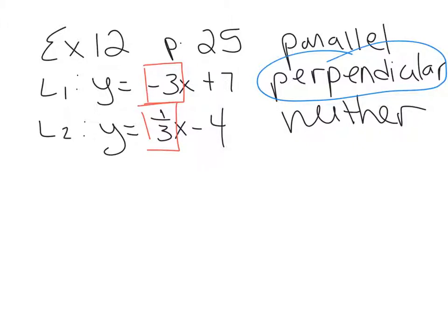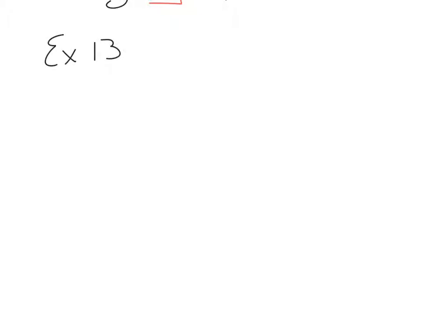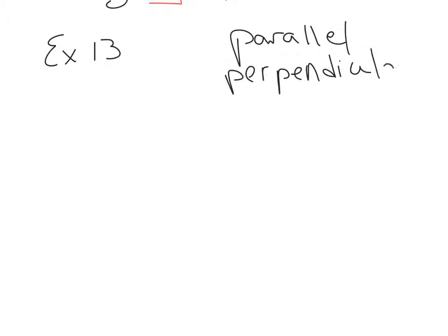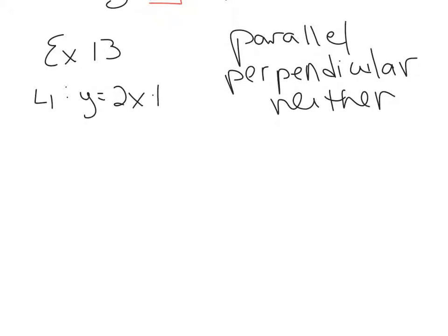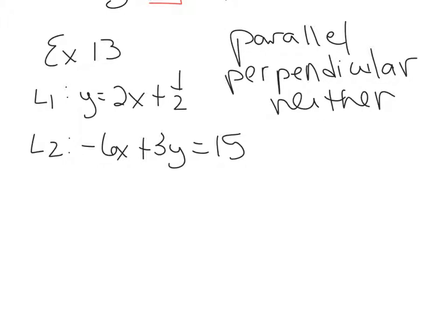Example 13 is the same type of question — determine if the lines are parallel, perpendicular, or neither. Line 1 is y equals 2x plus 1 half. Line 2, however, is negative 6x plus 3y equals 15. Line 1 is already in y equals mx plus b, so the slope is 2. Line 2 is not in slope-intercept form, so we need to convert it. Moving the x term gives 3y equals 6x plus 15, then dividing by 3 gives y equals 2x plus 5.